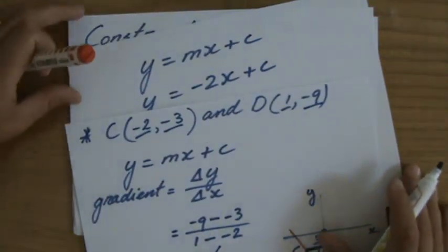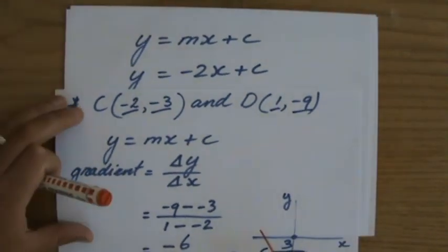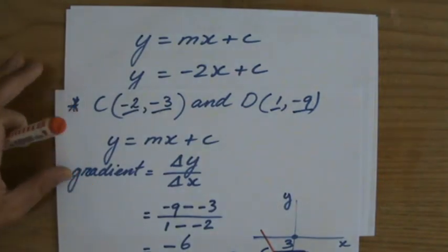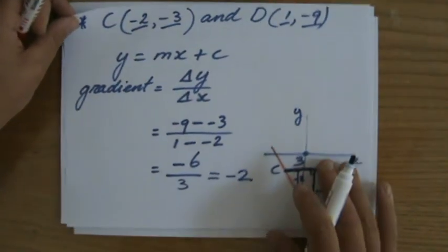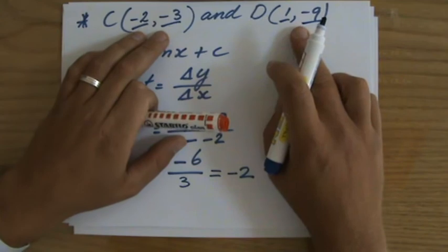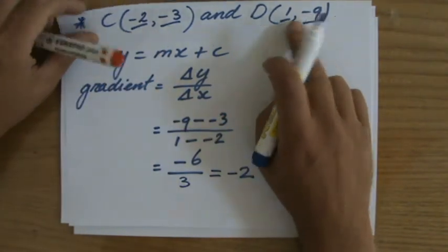Now, all I have to do is find the y-intercept. And how do I do that? Well, I cannot rely on my sketch. It's not accurate. I have to pick one of these two coordinates. Let's take this one, point D, it's 1, -9.